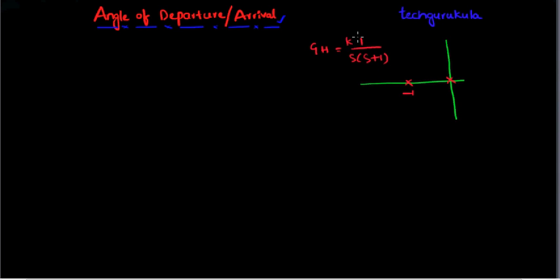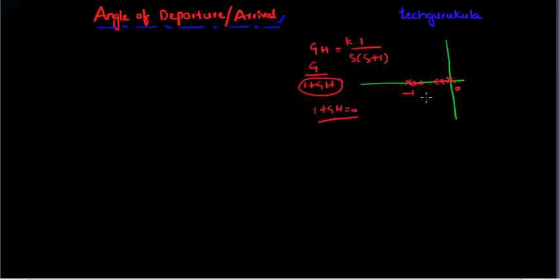If we have gain k and change k from 0 to infinity, and look at the closed loop transfer function G over (1 plus GH), the roots of 1 plus GH equals 0 vary with k. One pole moves in one direction and the other pole moves in the other direction as k is increased. For poles we call this the angle of departure, and for zeros we call it the angle of arrival.